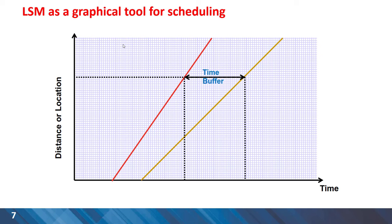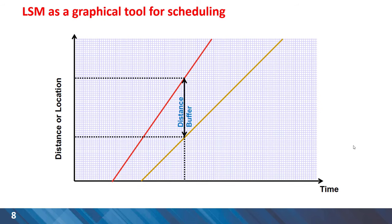For each activity in a linear project we can have a line representation and on the vertical axis we have distance or location and on the horizontal axis we have time. In this way, the gap between two activities shows the time buffer and the vertical gap between the two activities shows distance buffer.